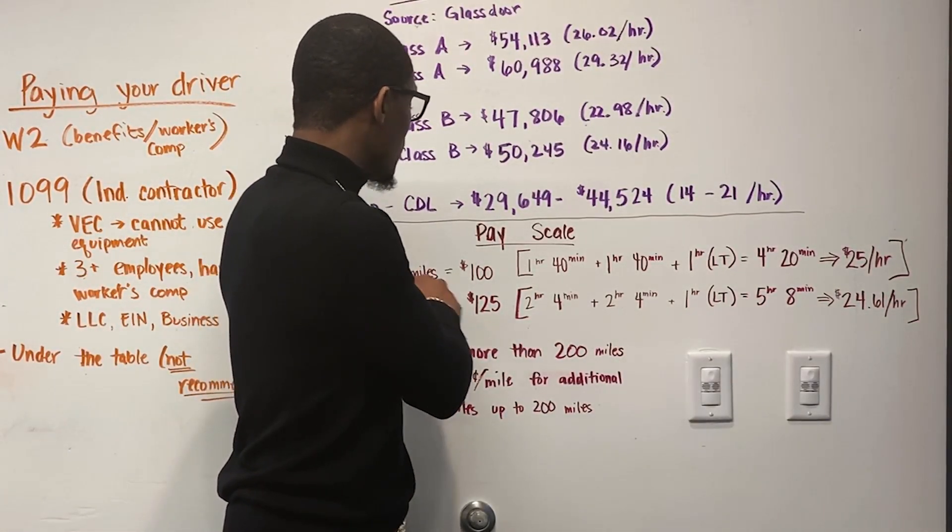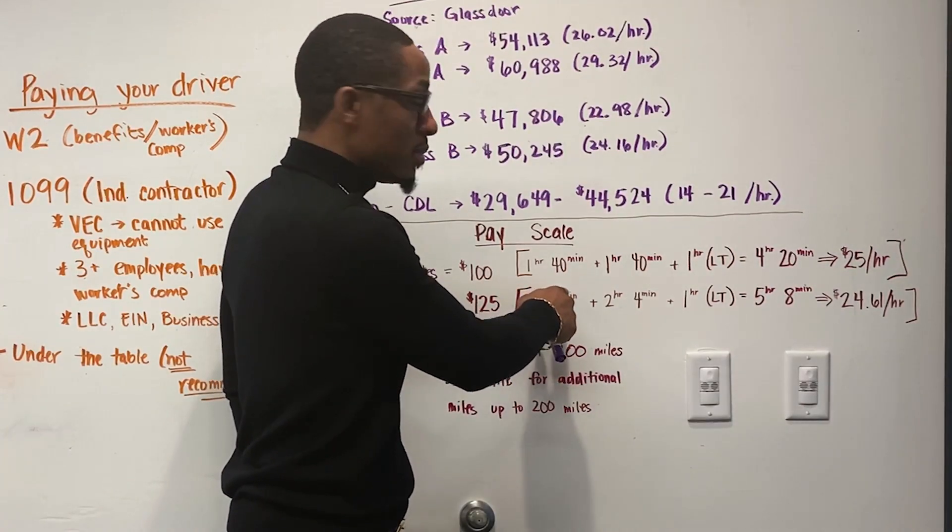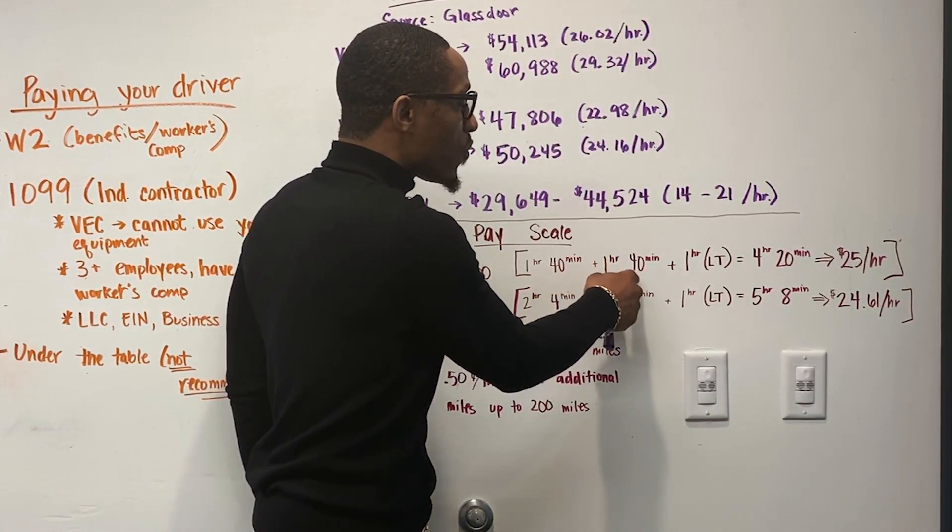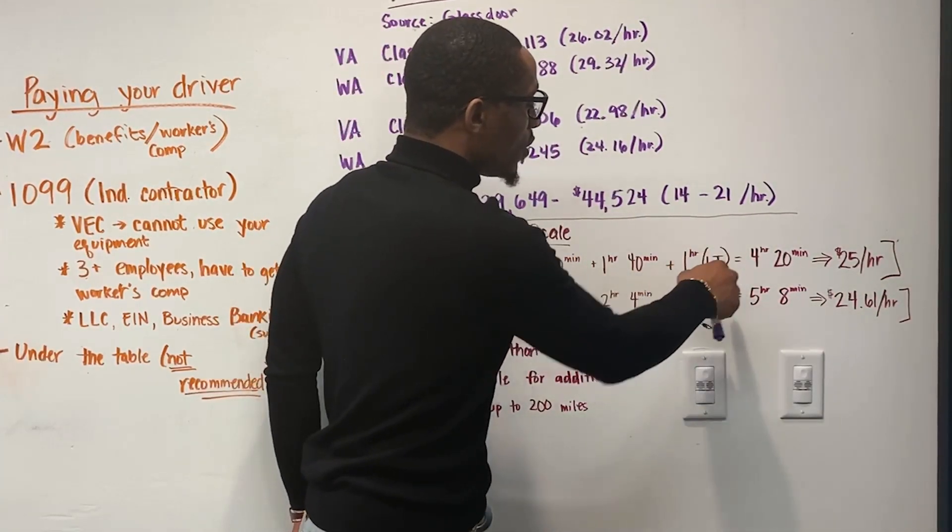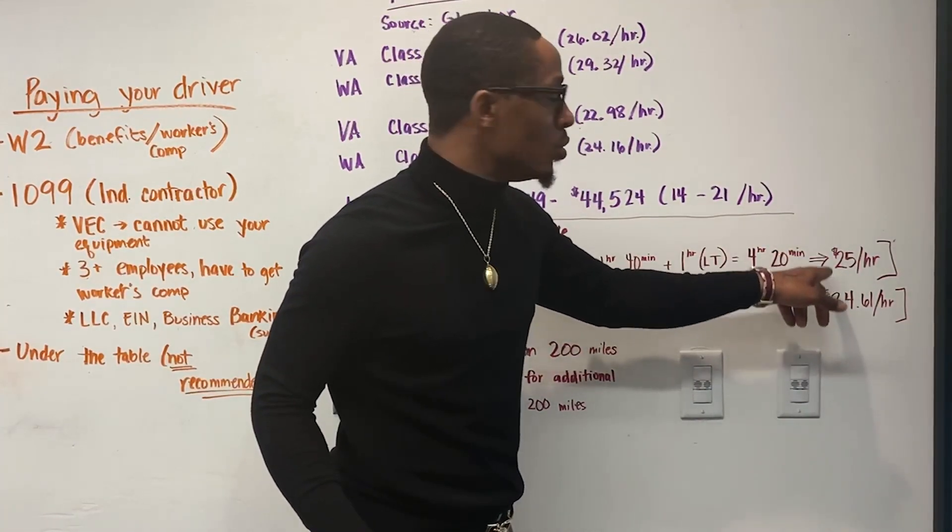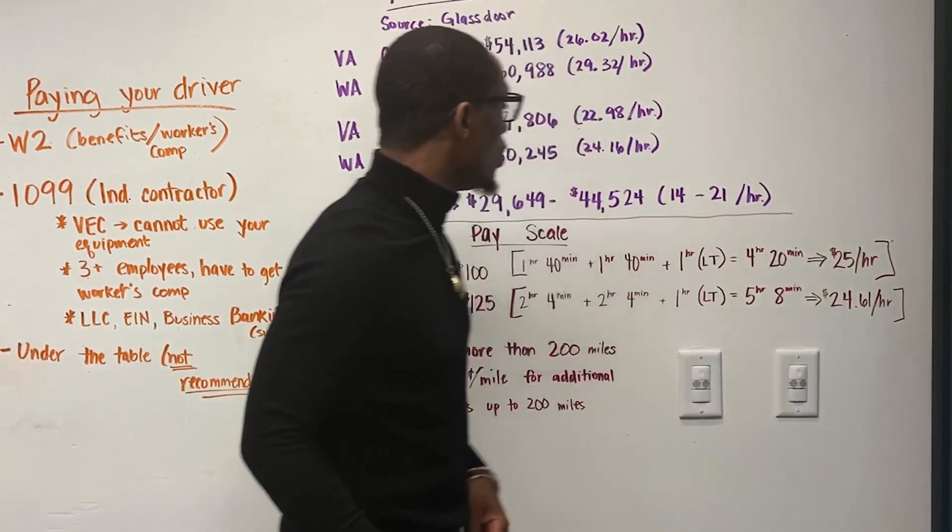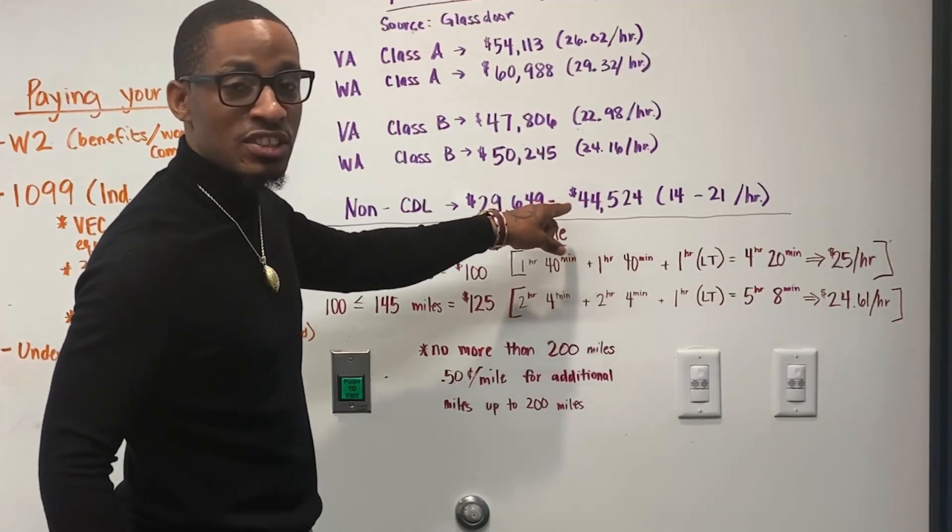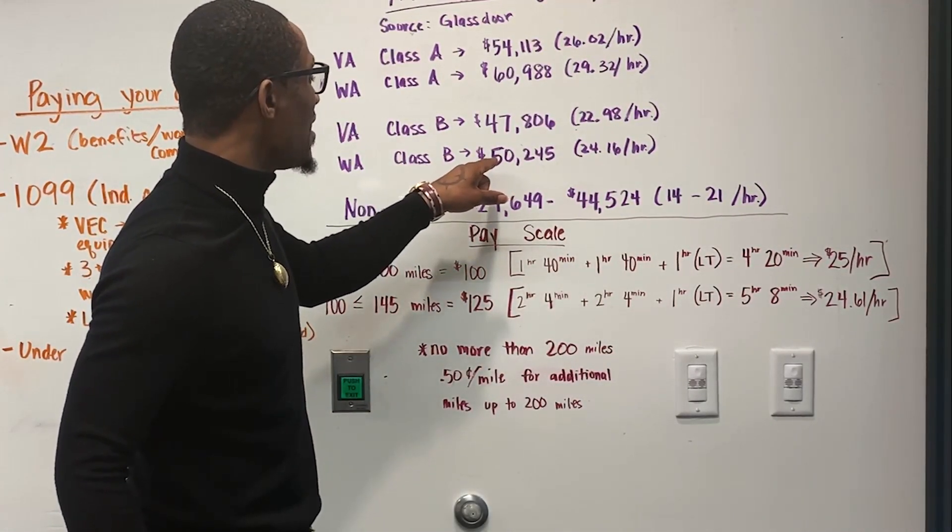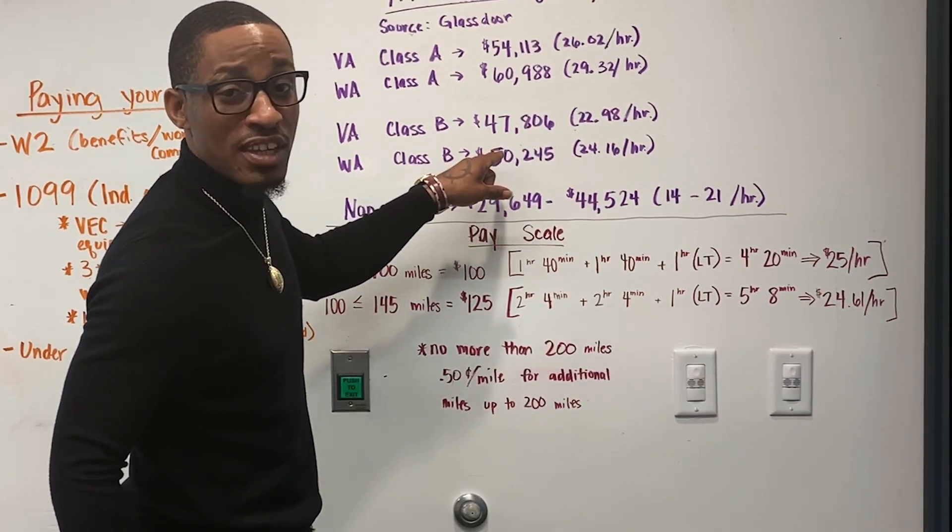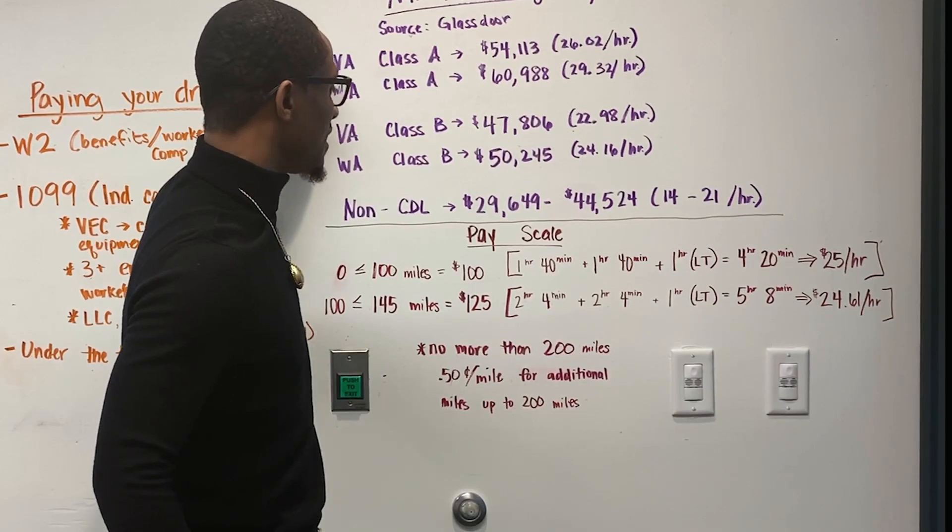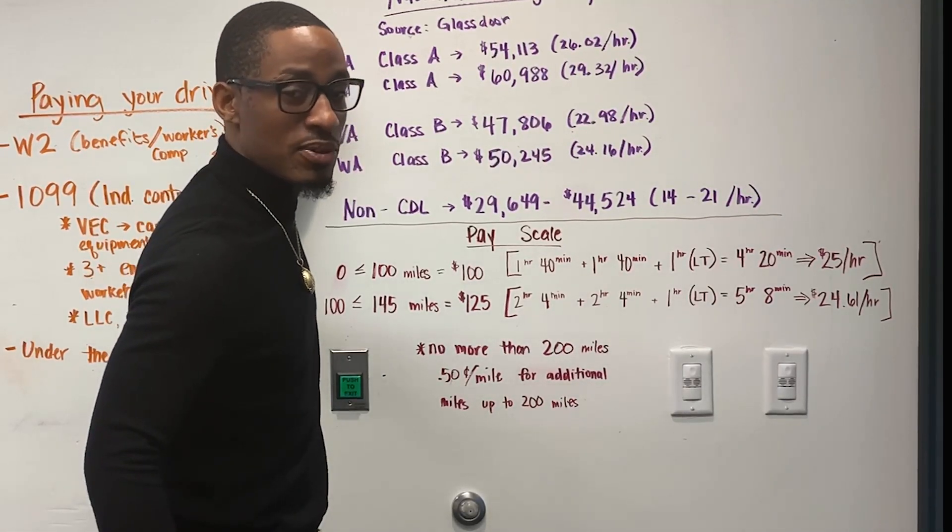Here's your justification. To drive the max 100 miles takes an hour and 40 minutes. The hour and 40 minutes to the destination, then an hour and 40 minutes back home, plus an hour load time equals four hours and 20 minutes, which translates to $25 an hour, which is over the nation's average max for non-CDLs, which is in line and more than someone with a certificate with a Class B license and almost at the same pay rate as a Class A driver. So that's how you can explain that.